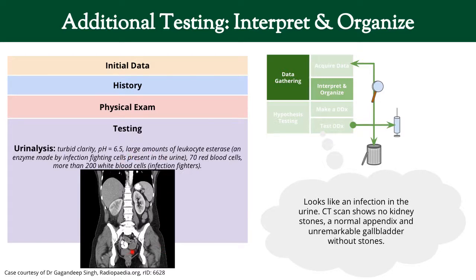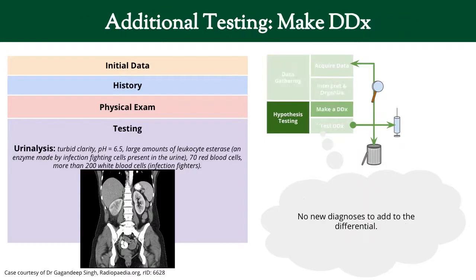Let's look at that CT scan — this is only one slice and it looks pretty normal. The urine test was a little cloudy, which is what turbid means. There were large amounts of leukocyte esterase — an enzyme made by white blood cells, the things that fight infection — and also some red blood cells, and more than 200 white blood cells in the urine. There are a lot of infection-fighting cells, so maybe there's an infection going on. Maybe there's a kidney stone, but we did not see one on the CT scan.